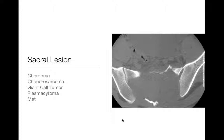The differential for sacral lesions: chordomas are rare but like to occur in the sacrum; chondrosarcomas and giant cell tumors can also occur there. Mets and plasmacytoma or multiple myeloma are by far the most common tumors you're going to see, so please consider those first. So: mets, plasmacytoma, multiple myeloma — and then chordoma, chondrosarcoma, and giant cell tumor. If you really see a nice cartilaginous matrix, it should push you toward chondrosarcoma, though it's not definitive.